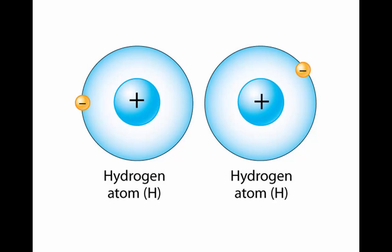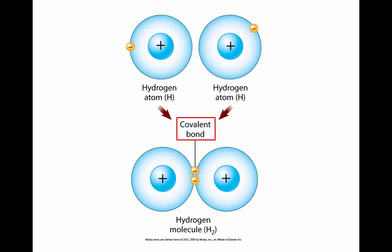Another type of chemical bond is a covalent bond. Consider these two hydrogen atoms, each of which only has one electron in its valence shell — both are unstable. To achieve stability, these hydrogen atoms both need two electrons in their valence shells, and in order to do this, the two hydrogen atoms must team up.